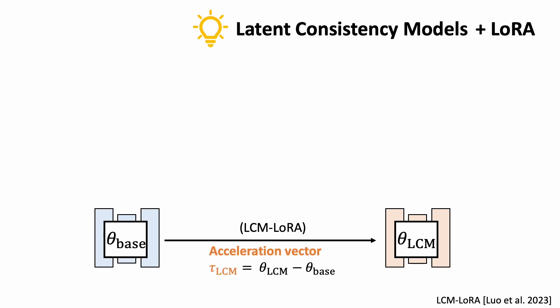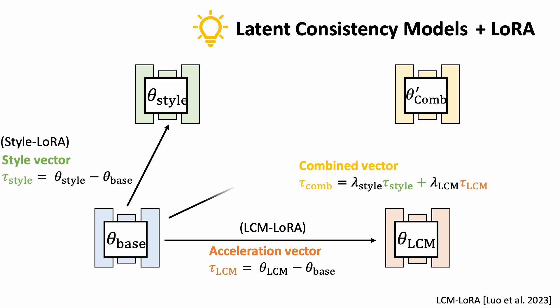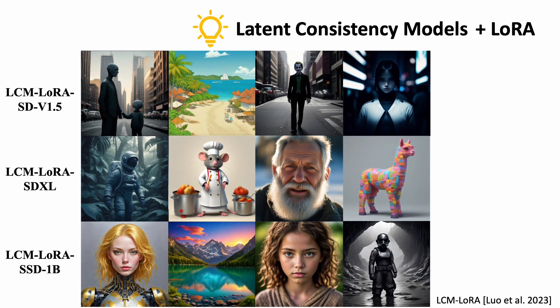Here, the acceleration vector is the parameter difference between the distilled and the base model. More interestingly, we can accelerate other fine-tuned models by linearly combining the acceleration and the style vectors. Here are some examples.